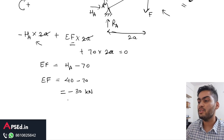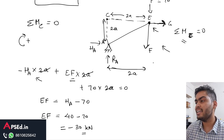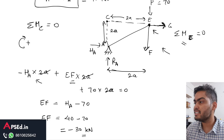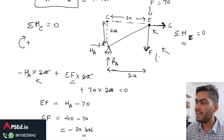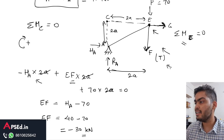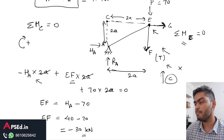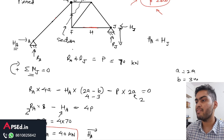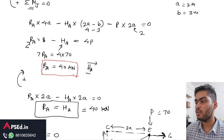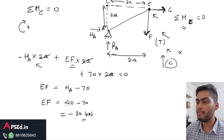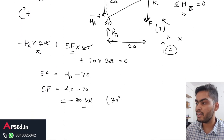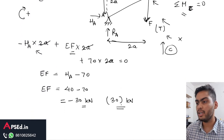The negative sign indicates that the assumed tensile direction for member EF is incorrect — the actual direction is compressive. However, since the question asks only for the magnitude, the answer is 30 kilonewtons.